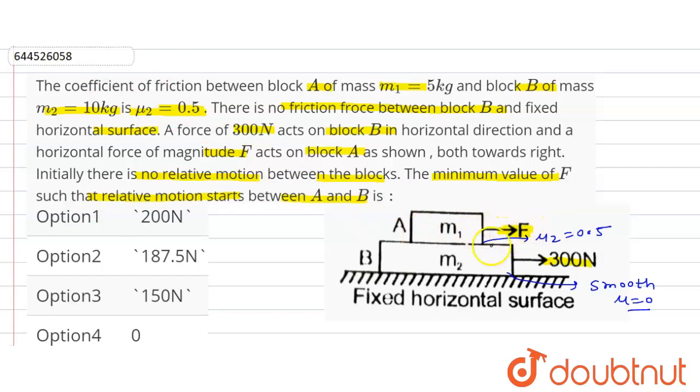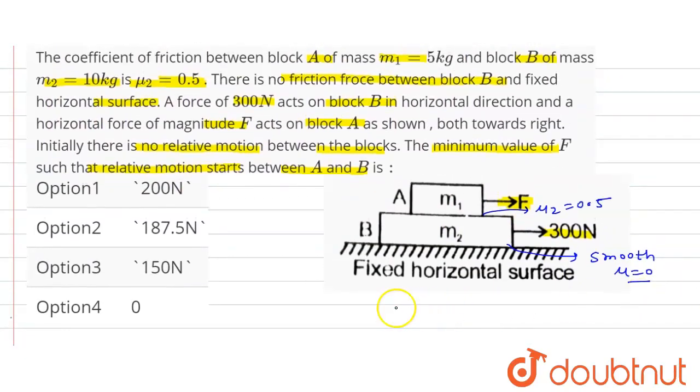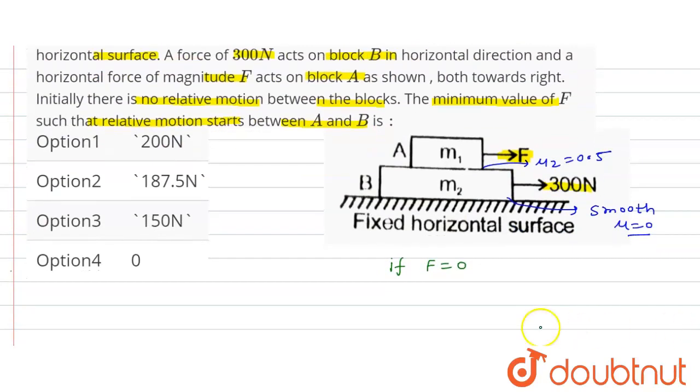First we will check if force is 0. Minimum force means if F is equal to 0, if we apply F force 0 means no relative motion. Let's assume if F is applied here so no relative motion, this block will be in rest.